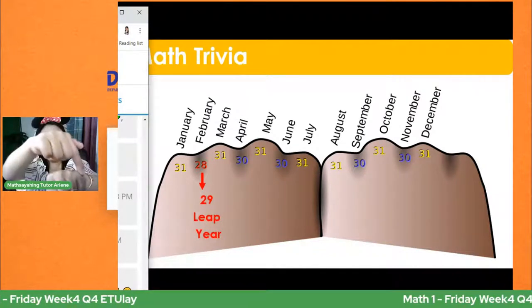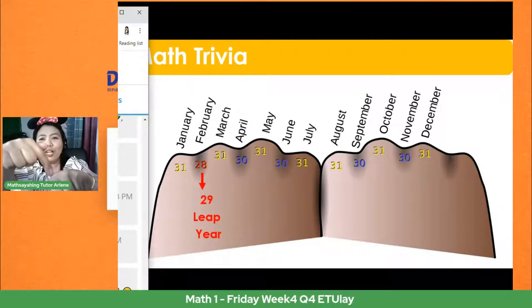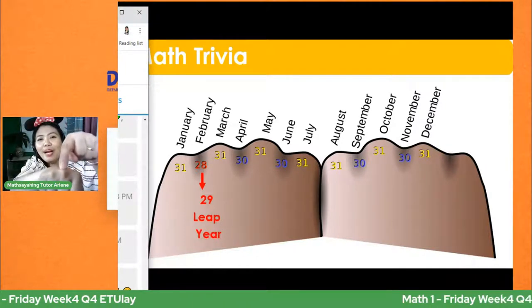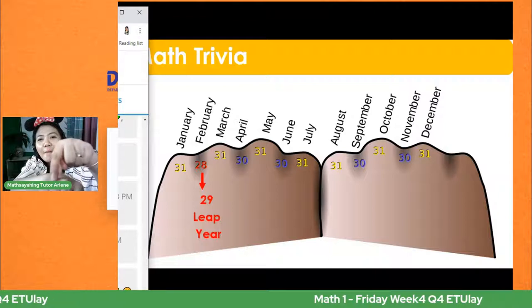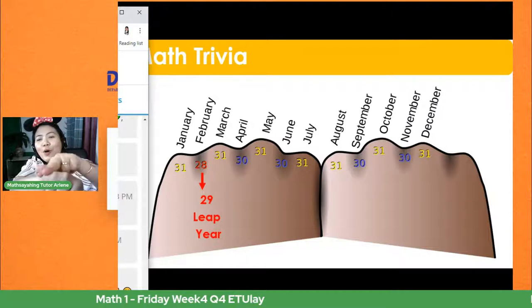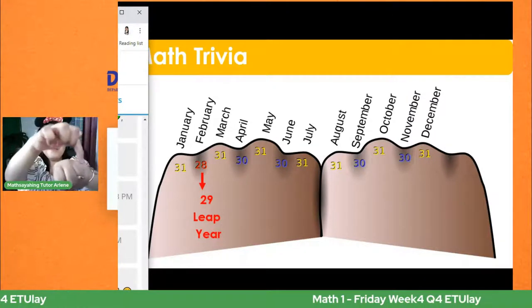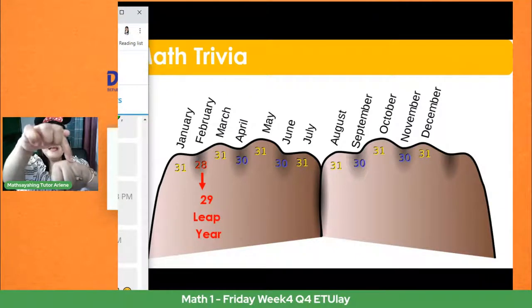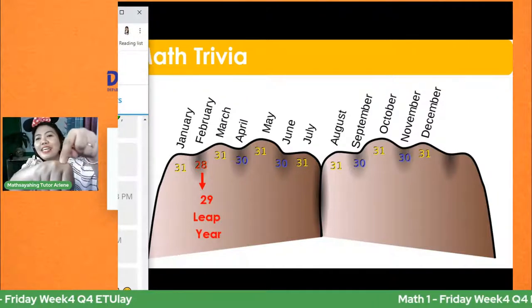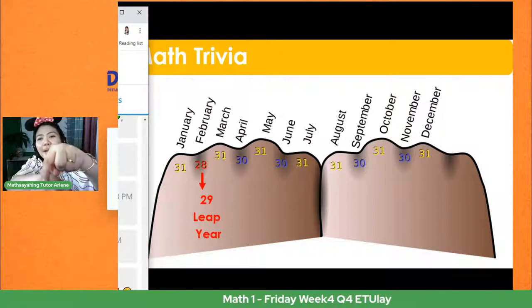Sa Tagalog: Enero, Pebrero, Marso, Abril, Mayo, Junyo, Hulyo, Agosto, Setiembre, Oktubre, Nobyembre, Disyembre. Sobra ng isa — huwag na nating pansinin. Ulitin natin — sabayan nyo ako: Enero, Pebrero, Marso, Abril, Mayo, Junyo, Hulyo, Agosto, Setiembre, Oktubre, Nobyembre, Disyembre. Hindi na ito kasama.